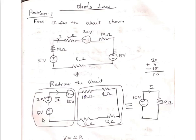Hi, this is a problem based on Ohm's law and Kirchhoff's law. Look at here, the first problem: find I for the circuit shown in the figure. This is the given circuit. You have to find what is the current flowing through this circuit.